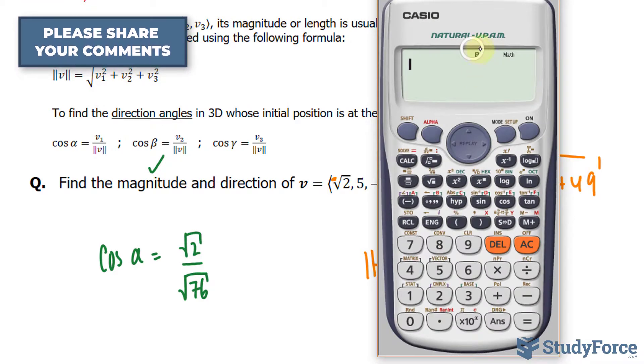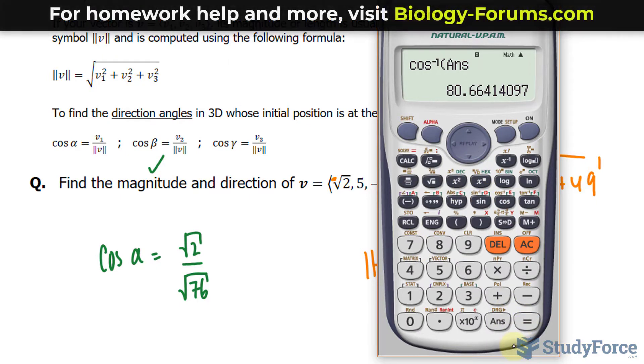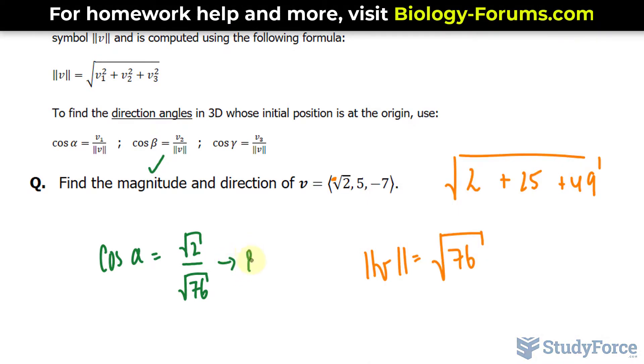Using our calculator, and notice that our calculation is in degrees, the square root of 2 divided by the square root of 76, and if we take cosine inverse of this, we end up with 80.6 degrees.